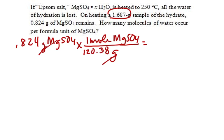Grams drop out, and if I take 0.824 divided by 120, I get 0.006845 moles of magnesium sulfate. Now I'm using too many significant figures because this is an in-between number, and I don't really mind that.